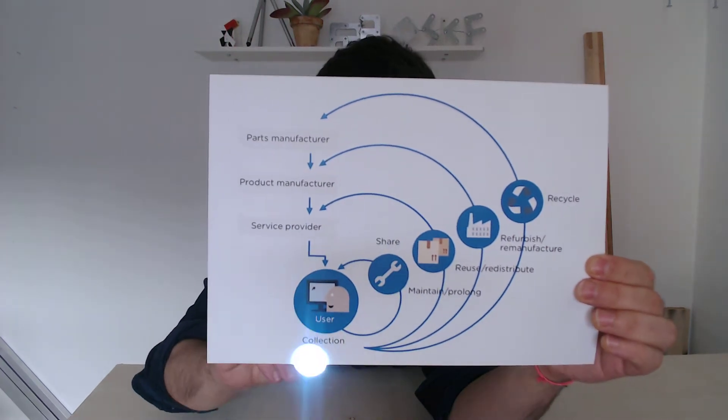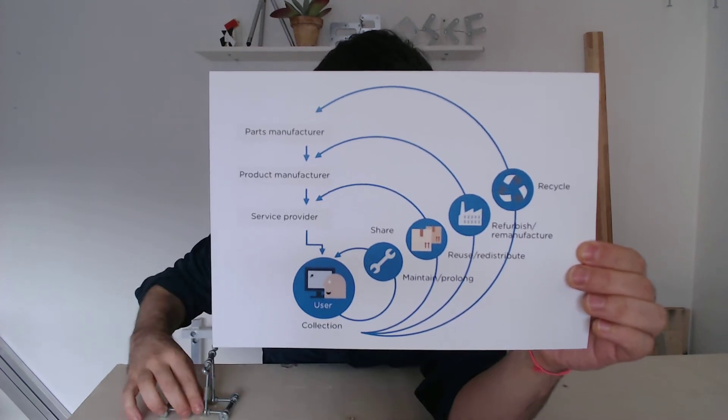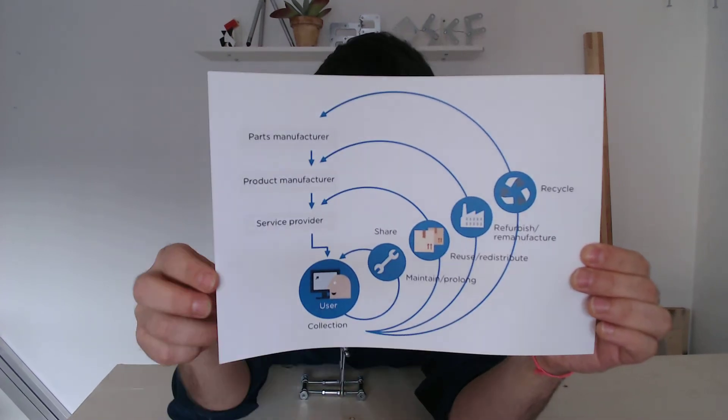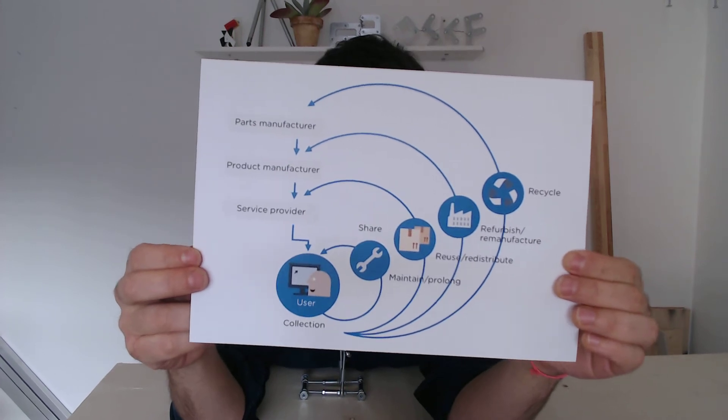The first cycle is about repairing. Imagine you have a little scooter. If something breaks, it would be easy for you to find out what it is and fix it.